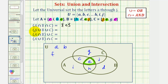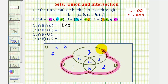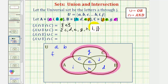Next we have A union B union C, which would contain all the elements in A or B or C. All those elements would be everything in the universal set except lowercase a, b, and F. So that would be C, D, E, G, H, I, and J.